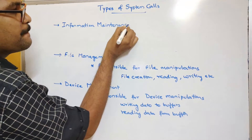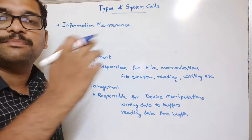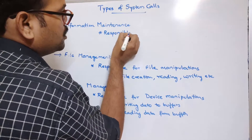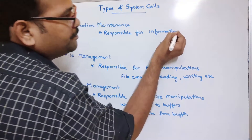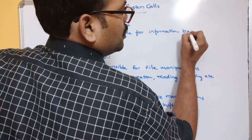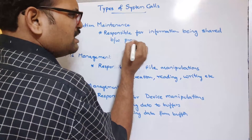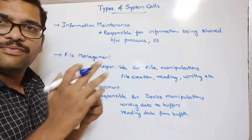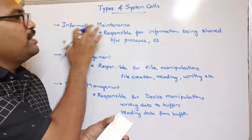The fourth category is information maintenance. This is responsible for all the information being passed from the operating system to software — that is, information being shared between processes or the operating system. Whatever information we are exchanging, those details are maintained with the help of information maintenance system calls.